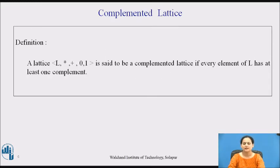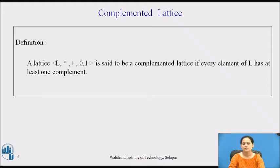Here is the second type: complemented lattice. We say a lattice L with binary operations and the elements called 0 and 1 of a lattice is said to be a complemented lattice if for every element of L it has at least one complement. The complement is such that if you perform either of the binary operations — in this case star or plus — it results into the 0 or 1 of the element.